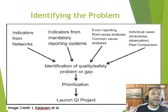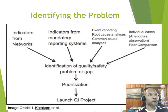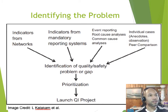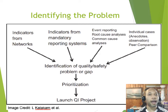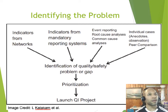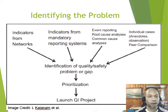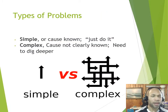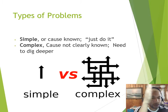Step one: identify the problem you want to address. These problems can be generated from multiple directions — from databases being collected, from mandatory reporting systems. At VCU we had patient safety reports where residents were required to submit reports to identify bad outcomes or close calls. There's also event reporting and individual cases: I had to send this patient out for this reason and it was probably preventable. You identify what you think is the problem, then you prioritize, and then you start your QI project.